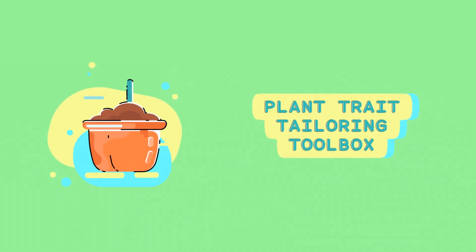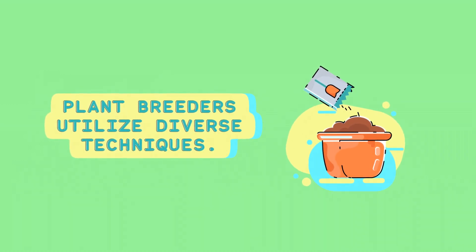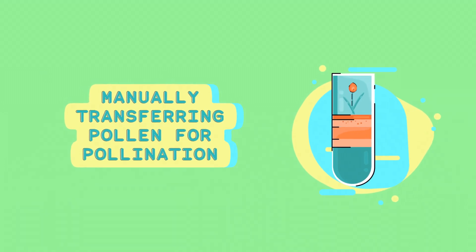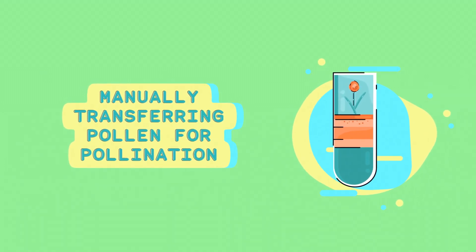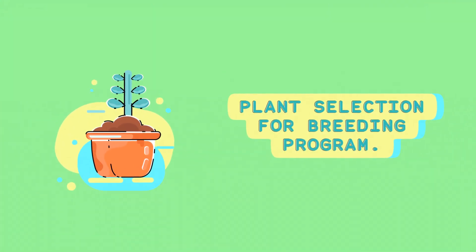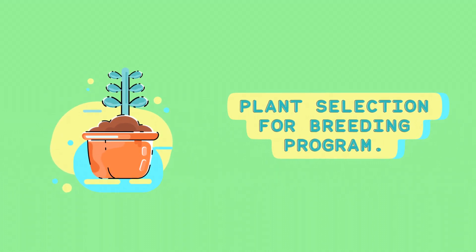A toolbox of techniques — methods for tailoring plant traits. Plant breeders employ a variety of techniques to achieve their goals. Artificial pollination involves manually transferring pollen from one plant to another to create desired crosses. Selection: breeders select plants with the desired characteristics from a large population to become parents of the next generation.